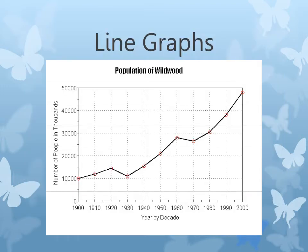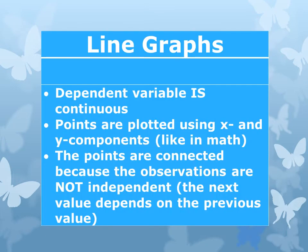A line graph — here's an example. This is not a best fit line; this is just a line graph that's been connected. The dependent variable is continuous. The points are plotted using x and y components like in math. The points are connected because the observations are not independent of each other. You want to see a relationship. So if you want to see a relationship between the two variables, use a line graph — what happens to y when you change x.